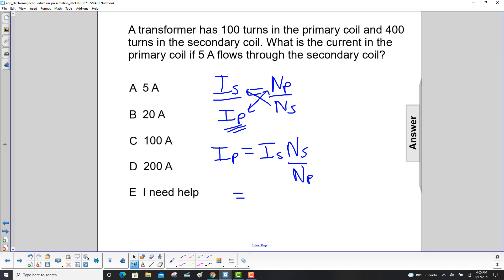So the current in the secondary coil is 5 amps. The number of windings in the secondary coil is 400. The number of windings in the primary coil is 100.